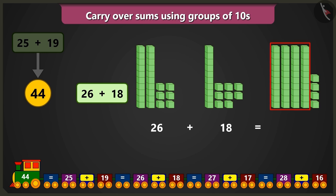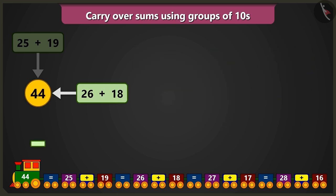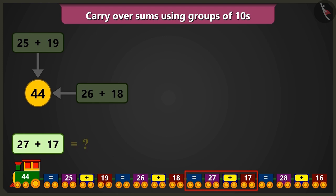So here also, 4 tens and 4 ones add up to 44. Now what will be the sum of 27 and 17? Come on.